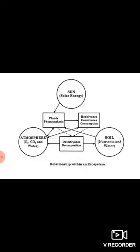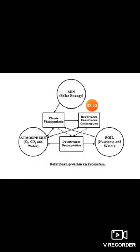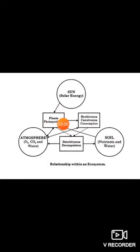This is the slide where we stopped in lecture two, where we saw the interrelationship that exists in the ecosystem — how the sun plays a crucial role in starting the ecosystem's processes. We saw what happens to solar energy taken by plants: they perform photosynthesis, producing food by themselves.